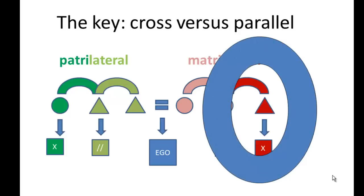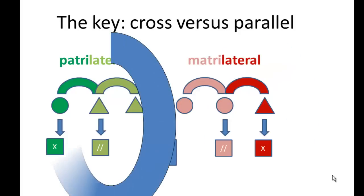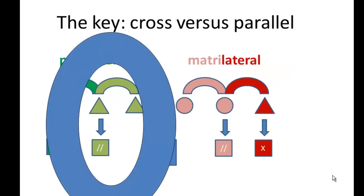A cross-cousin, for example on the mother's side, are the offspring of the mother's brother's children. The cross occurs in gender between mother and her brother. The parallel cousin, for example on the father's side, would be the father's brother's children. Father and his brother are the same gender, and so we speak of them as parallel siblings.